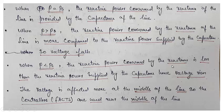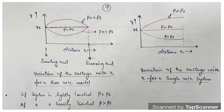When P is less than PS, the reactive power consumed by the reactance is less than that supplied by the capacitance, hence voltage rises — the capacitance provides more reactive power than consumed by the inductance, resulting in voltage rise. The voltage is affected most at the middle of the line, so FACTS controllers are usually placed near the middle of the line — this is generally the case for the two-machine model. For the radial system, they have to be installed at the appropriate point.